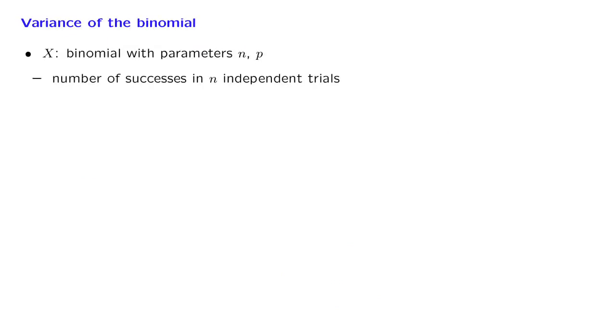As an illustration of the usefulness of the property of the variance that we have just established, we will now use it to calculate the variance of a binomial random variable. Remember that a binomial with parameters n and p corresponds to the number of successes in n independent trials. We use indicator variables. This is the same trick that we use to calculate the expected value of the binomial. So the random variable X sub i is equal to 1 if the i-th trial is a success, and this is zero otherwise. And as we did before, we note that X, the total number of successes, is the sum of those indicator variables. Each success makes one of those variables equal to 1. So by adding those indicator variables, we're just counting the number of successes.